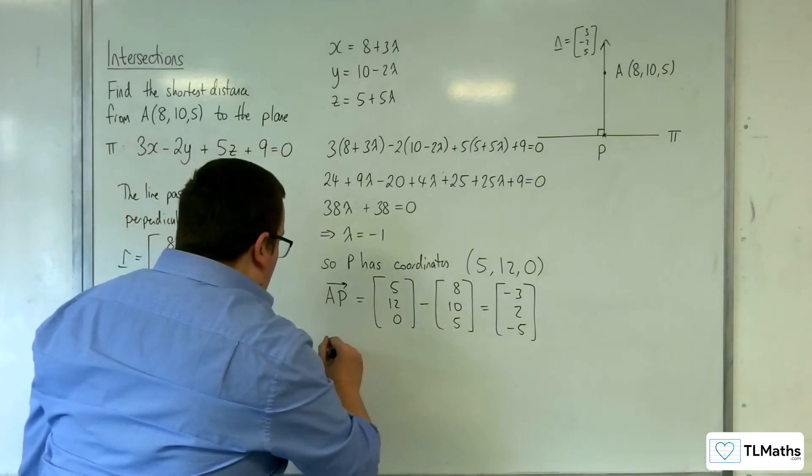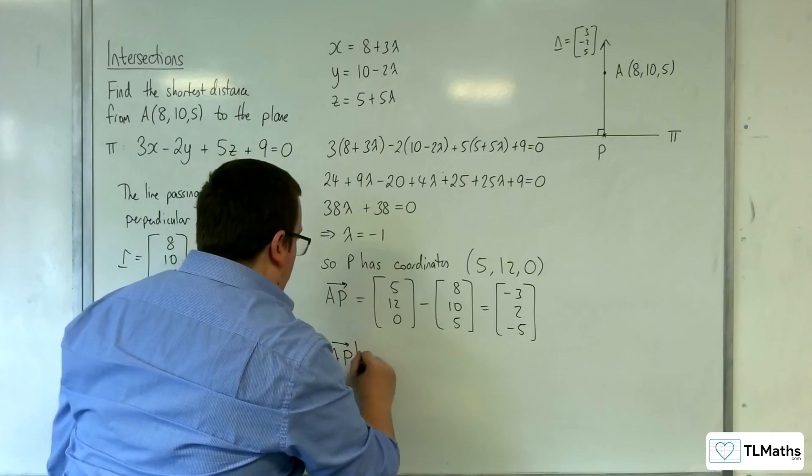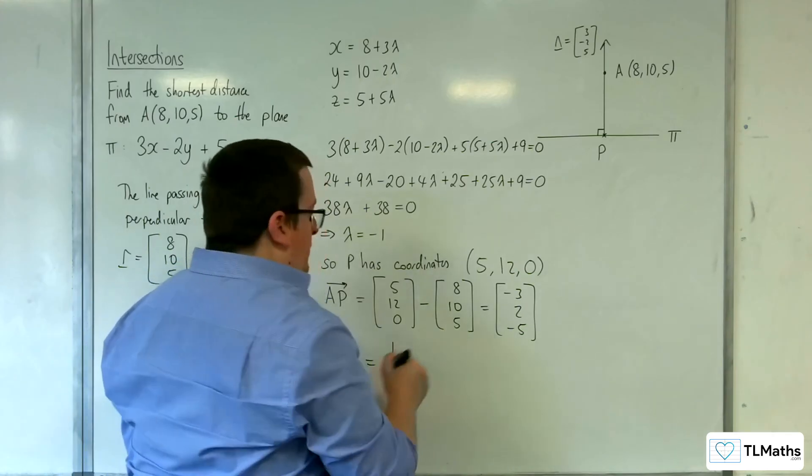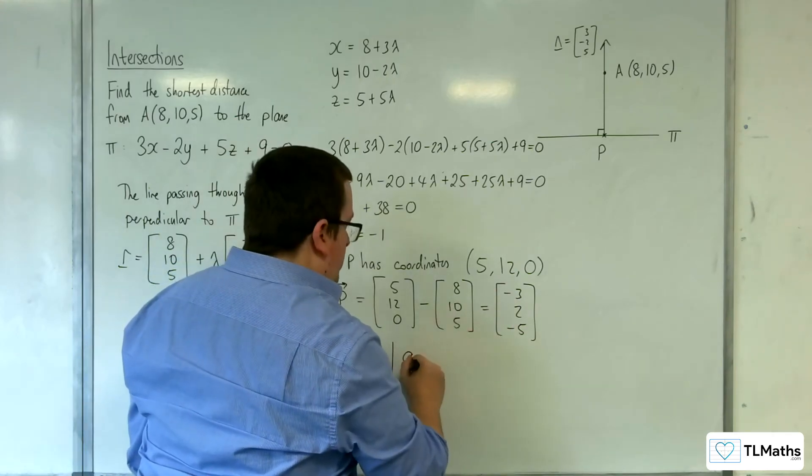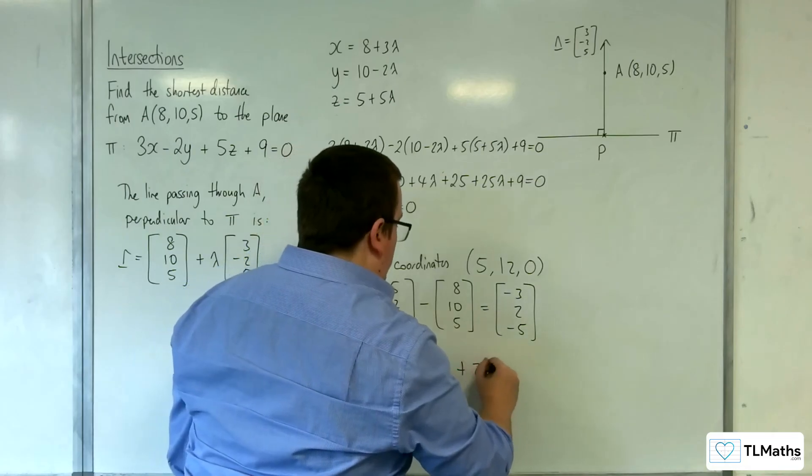So that means the length of AP is equal to the square root of (-3)² + 2² + (-5)², so √(9 + 4 + 25).